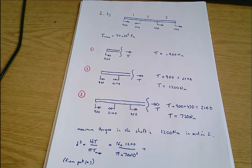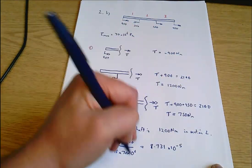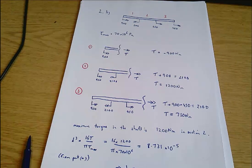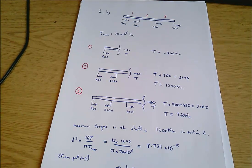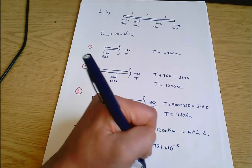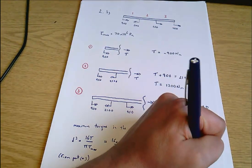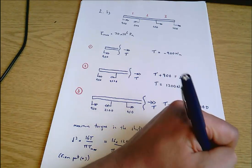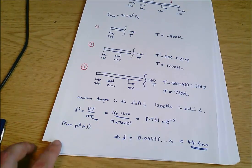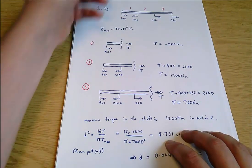Which equals 16 times 1200 divided by pi times 70 times 10 to the 6, which is 8.731 times 10 to the minus 5, which means that D, the shaft diameter, equals the cube root of that, which comes out as 0.04436 meters, which equals 44.4 millimeters to three significant figures. That was 2B1.